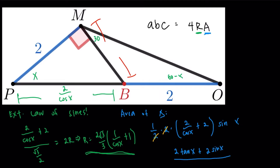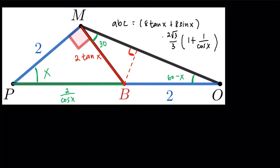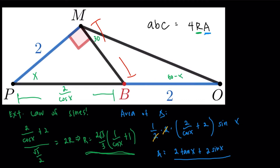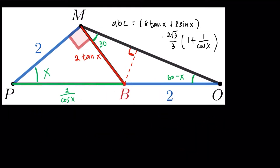With the circumradius and area done, I put them back into the formula to get the product ABC equals 4R times area. That gives me ABC expressed as a trigonometric expression. Now I've reached my goal of expressing everything in trig functions, and I need to find a relationship between them so I can evaluate the product.